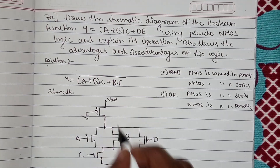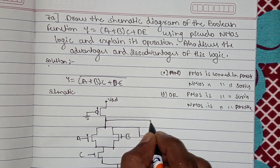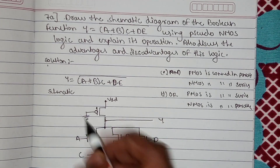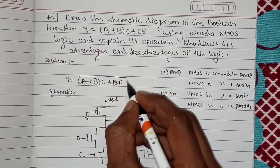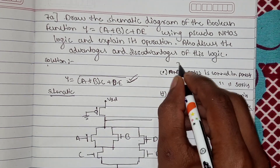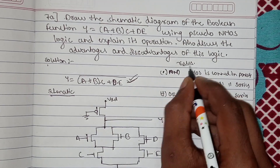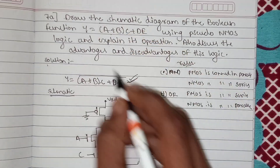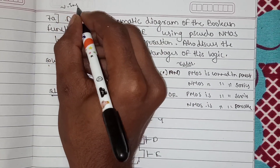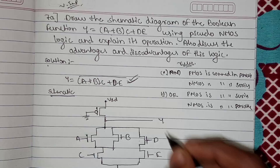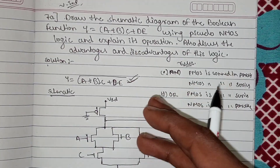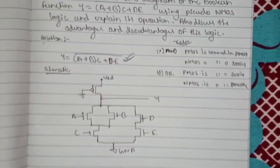This pull-down network is connected to ground. In between the pull-down and pull-up network there will be an output Y. This is how the schematic of this boolean equation looks. These are the rules to draw the schematic diagram. This 7a question is very important from the exam point of view — this type of question will definitely appear in the exam.